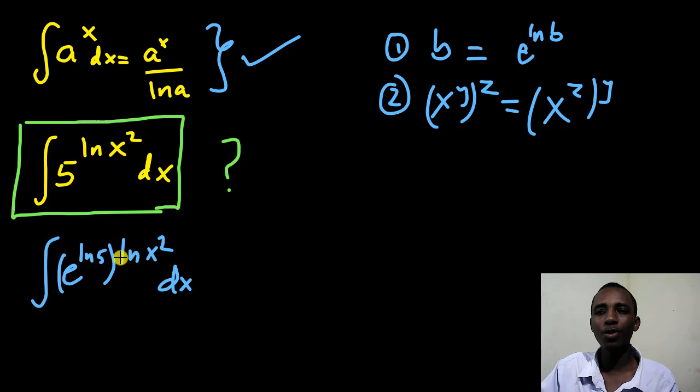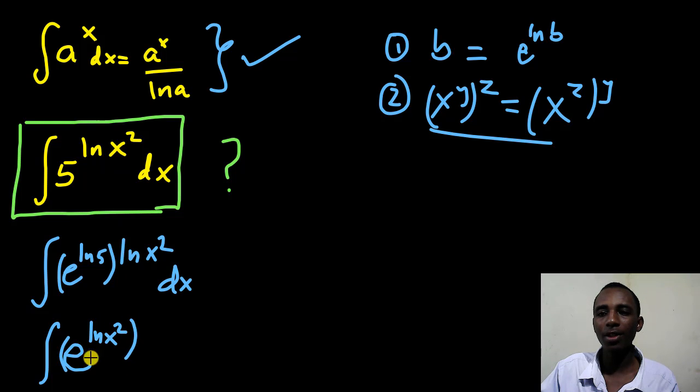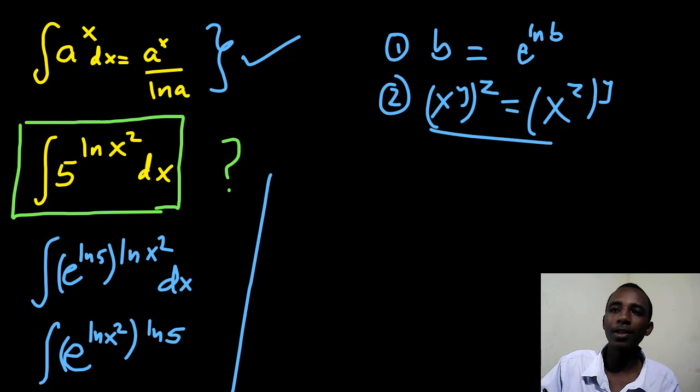And the second thing I'm going to do is to use this property here. I'm going to interchange the powers. So I'll write this as the integral of the exponent of the natural log of x squared to the power, the natural log of 5.